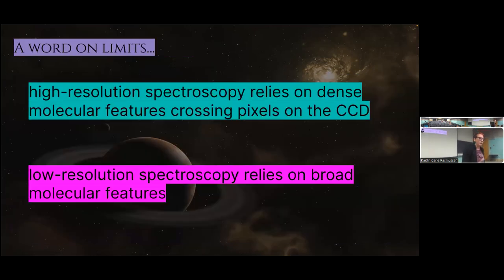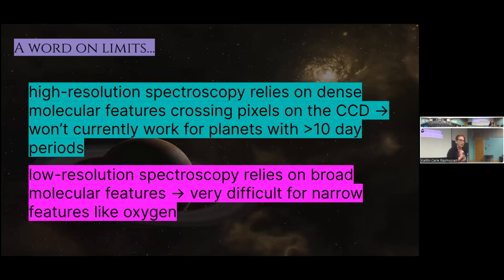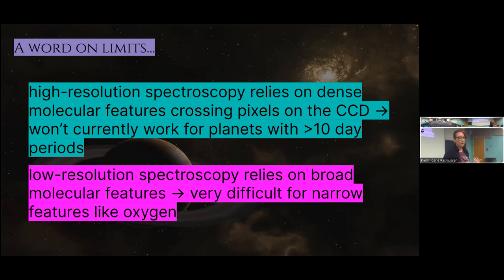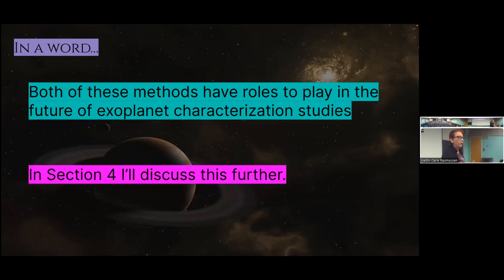High resolution uses dense molecular features crossing across a lot of pixels to work, while low resolution relies on broad molecular features. High resolution spectroscopy is very difficult for planets which don't move a lot across the transit or secondary eclipse — it's best suited for short-period planets. Low resolution relies on broad features, so features that are not very broad, like the oxygen A-band, are really hard to do with low res. Oxygen is actually really hard for high res too, because there's very little structure in the line. Both methods do have roles to play in future exoplanet characterization.